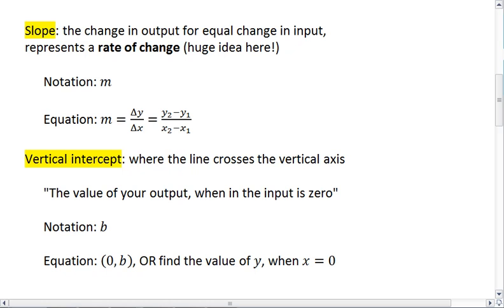Slope is the change in the output for an equal change in input. And it represents a rate of change. This is a huge idea.